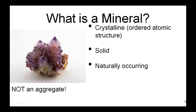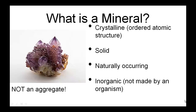A mineral is solid and naturally occurring — thus the products of industrial or commercial processes are not considered true minerals. Industrially produced minerals, such as synthetic rubies or sapphires, are readily recognized because of their purity of chemical composition, but if they are created by machines, they are not considered a mineral. Minerals are inorganic, which means not made by an organism, and they have a specific chemical composition, though nature is considerably more messy than a laboratory, so intrusions and deviations are quite common.